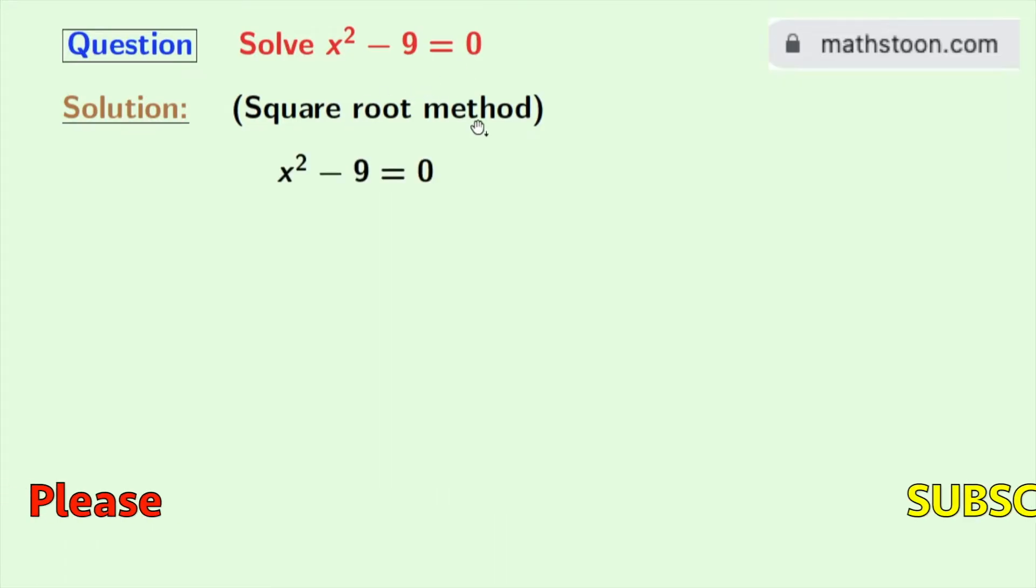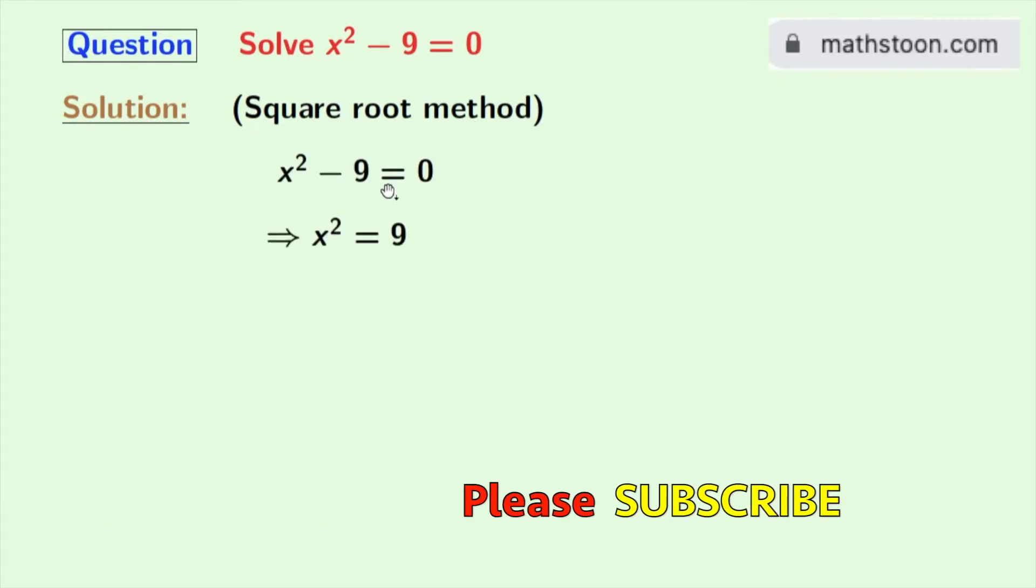This is our given equation. Now we will write this as x² = 9. As we know that 9 is equal to 3², so we will take it here.